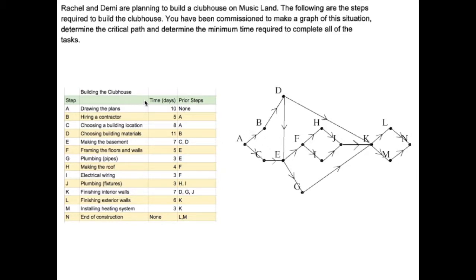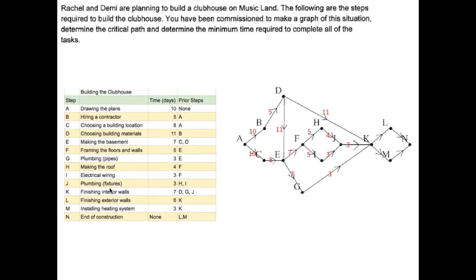Now let's put the weights down. A has a length of 10 — it takes 10 days. B has a length of 5. C has a length of 8. D has a length of 11. E has a length of 7. F has a length of 5. H has a length of 4. I has a length of 3. J has a length of 3. G has a length of 3. K takes 7 days. L has a length of 6. And M has a length of 3.